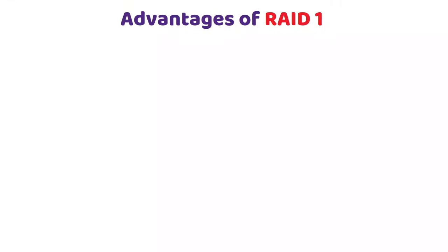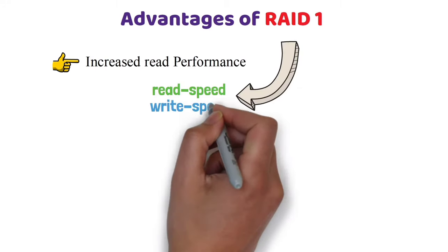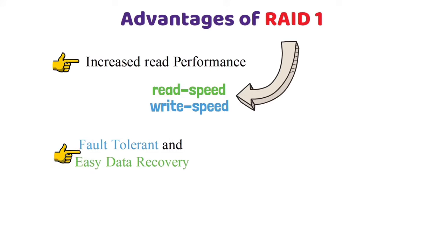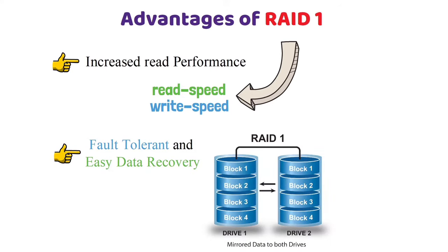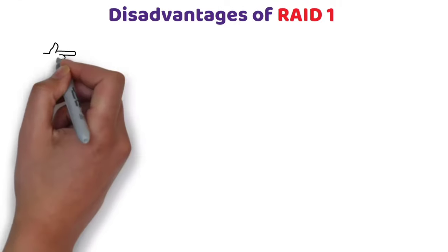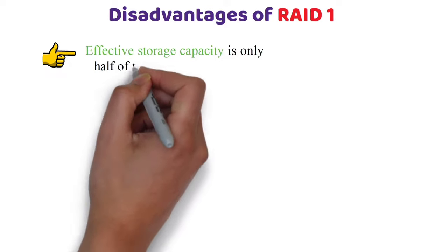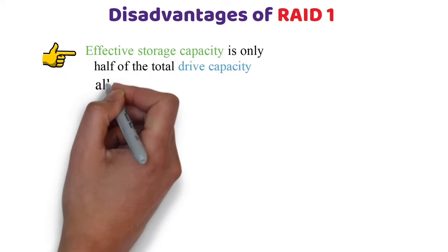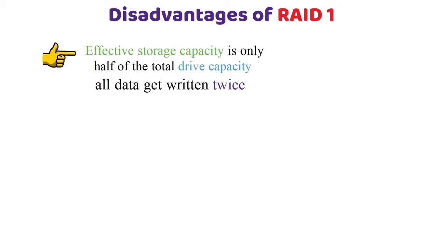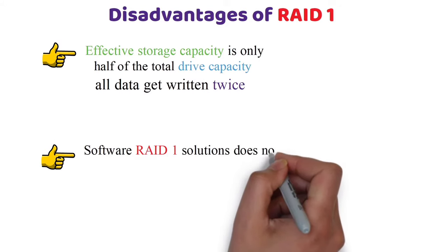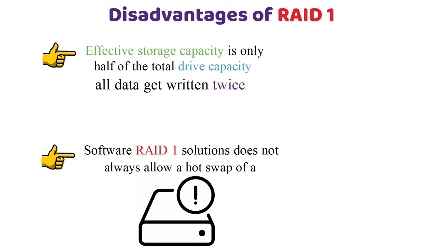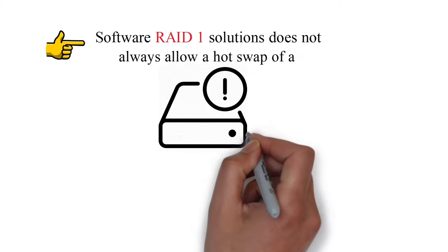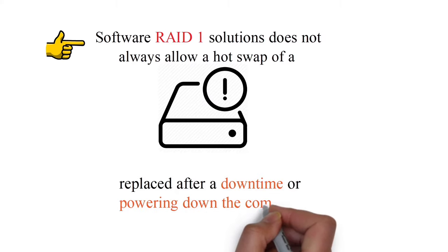Advantages of RAID 1: RAID 1 offers excellent read and write speed. It is fault tolerant and provides easy data recovery — if a drive fails, it can be easily recovered from the mirrored drive. Disadvantages of RAID 1: Effective storage capacity is only half of the total drive capacity because all data gets written twice. Software RAID 1 solutions do not always allow a hot swap of a failed drive, meaning the failed drive can only be replaced after a downtime or powering down the computer.